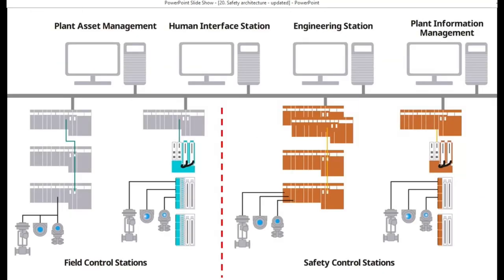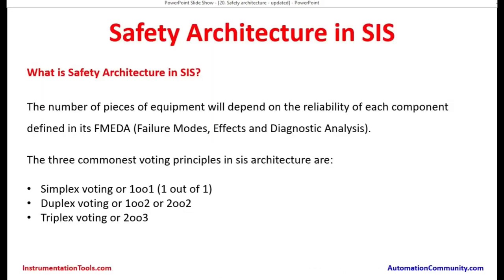We have seen two different types of architecture — one brief architecture and one detailed architecture by a specific vendor. What is safety architecture in SIS? The number of pieces of equipment will depend on the reliability of each component as defined in its FMEDA — failure modes, effects, and diagnostic analysis.